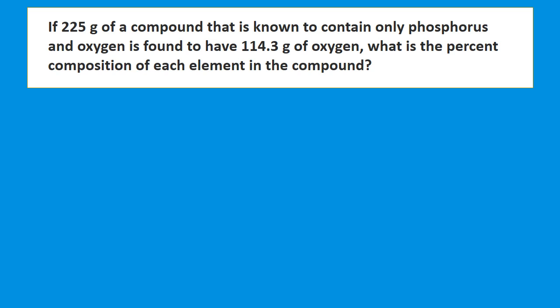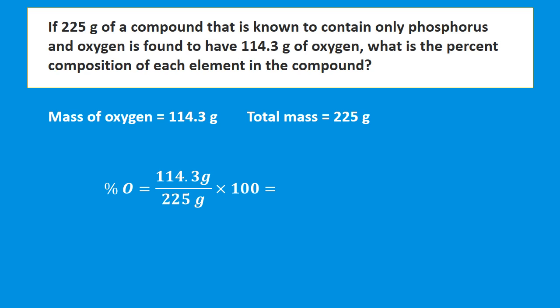In this example, we're told if 225 grams of a compound known to contain only phosphorus and oxygen is found to have 114.3 grams of oxygen, what is the percent composition of each element? We know the mass of oxygen, so whatever mass is remaining is the mass of phosphorus. The percent of oxygen is 114.3 divided by 225, multiplied by 100, which gives us 50.8%.